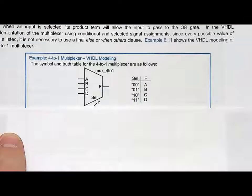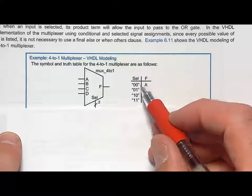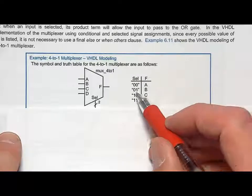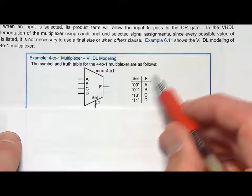We have this multiplexer and we'll call it mux_4to1 because we're going to implement it in VHDL. When select is 00, F gets A. When it's 01, F gets B. When select is 10, F gets C. When select is 11, F gets D.